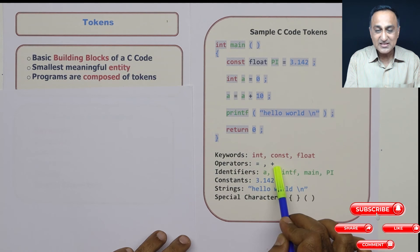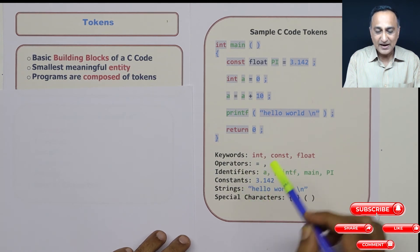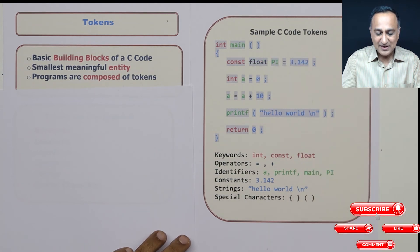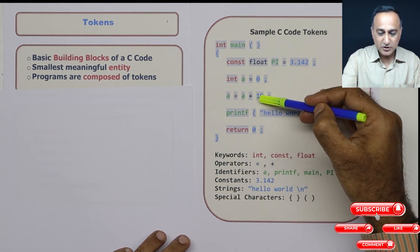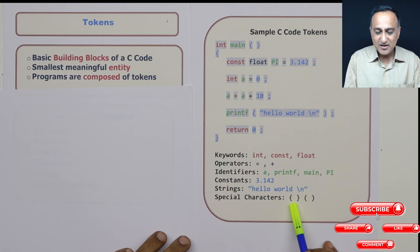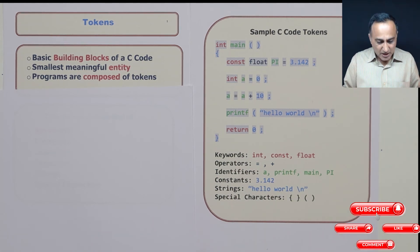Operators are like equal to. Comma is also an operator. Plus is an example of an operator. Identifiers are like a, pi, printf, main, etc. Constants are 3.142, 0, 10, etc. Strings are anything enclosed in double quotes. Examples of special characters are flower braces, round parenthesis, and so on.